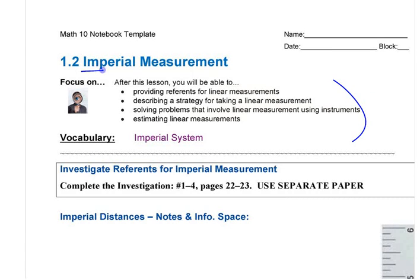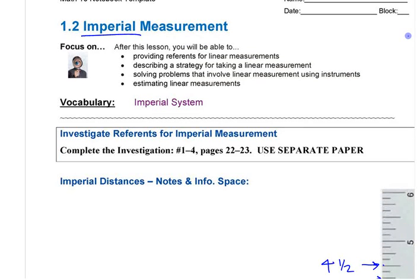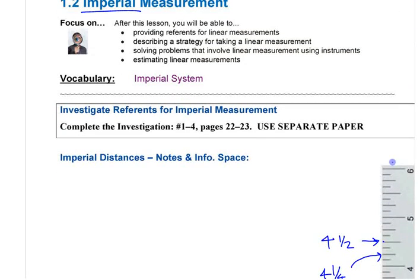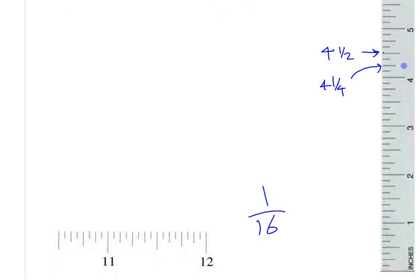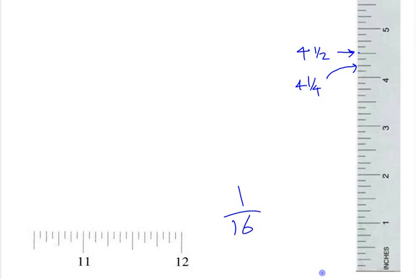This second section talks about imperial measurement. The first section we did was SI measurement, or the metric system, which you're more familiar with. This you're probably less familiar with. Last time when we did some measuring with imperial rulers and tape measures, hopefully you gained a little bit of understanding about how they're set up.